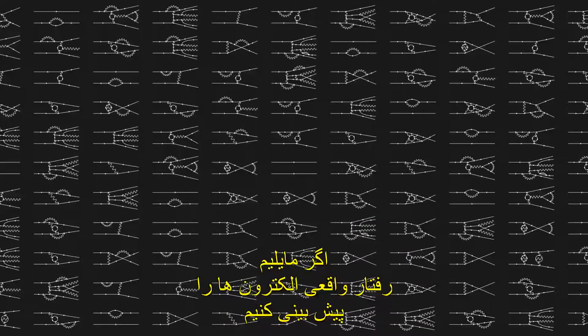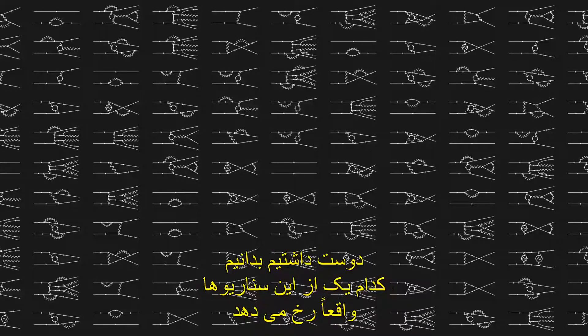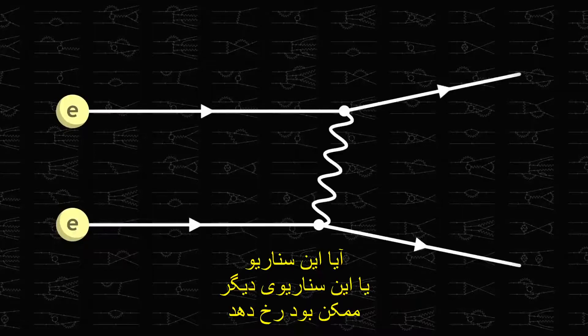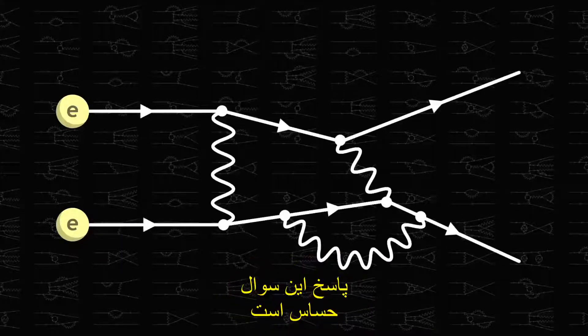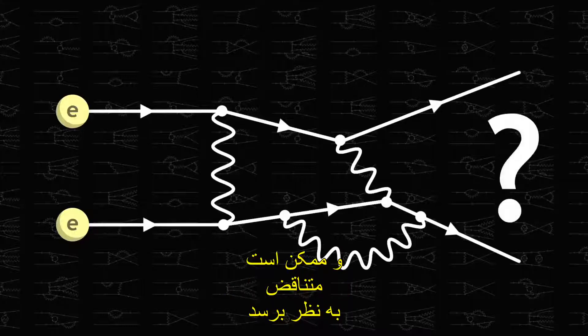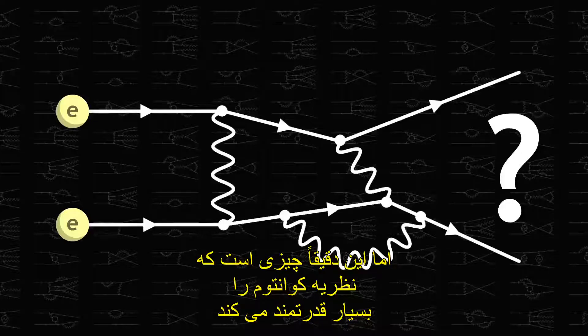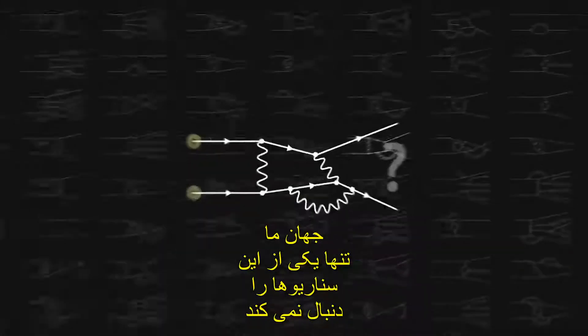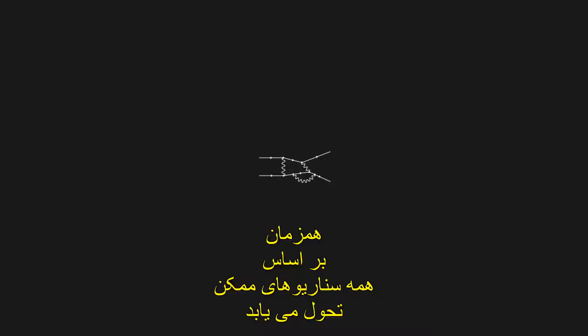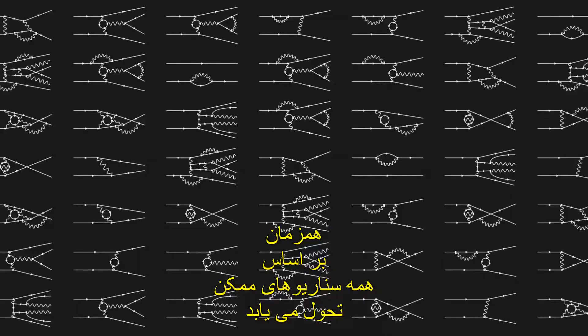But this doesn't help us too much. If we wish to predict the actual behaviour of electrons, we'd like to know which of these scenarios actually occurs. The answer to this question is subtle and may seem counterintuitive, but it is precisely what makes quantum theory so powerful. Our universe does not follow just one of these scenarios — it evolves at the same time according to all possible scenarios. Starting from a given initial situation, all possibilities occur at the same time, in parallel, as a superposition of every imaginable scenario. To describe the behaviour of electrons, it is necessary to take into account all Feynman diagrams.